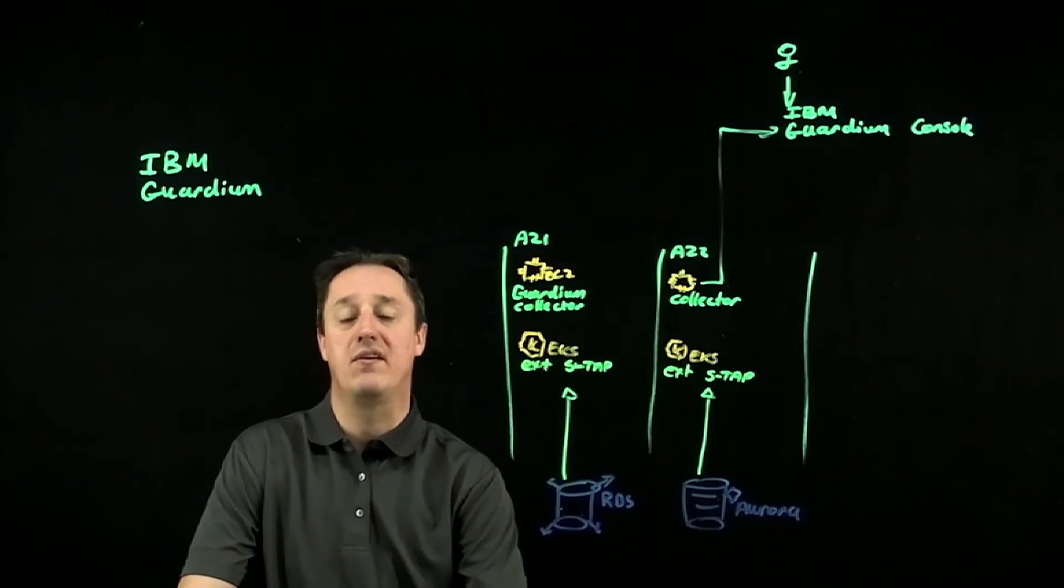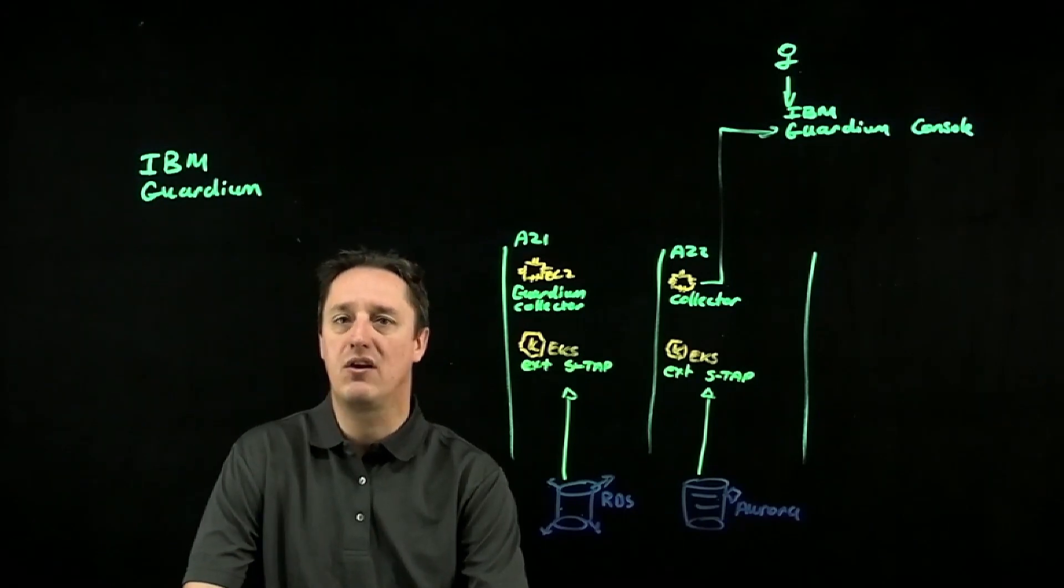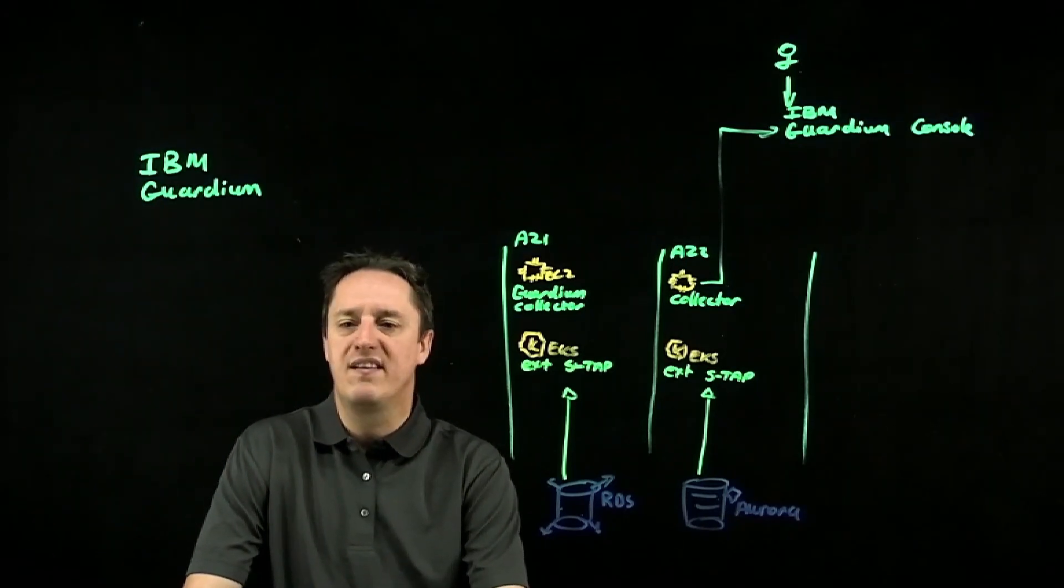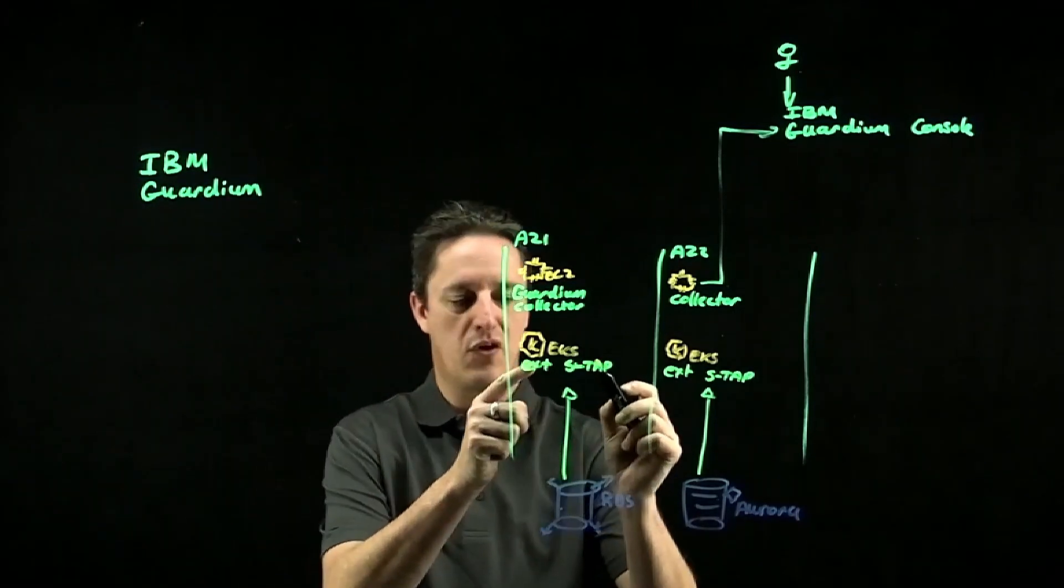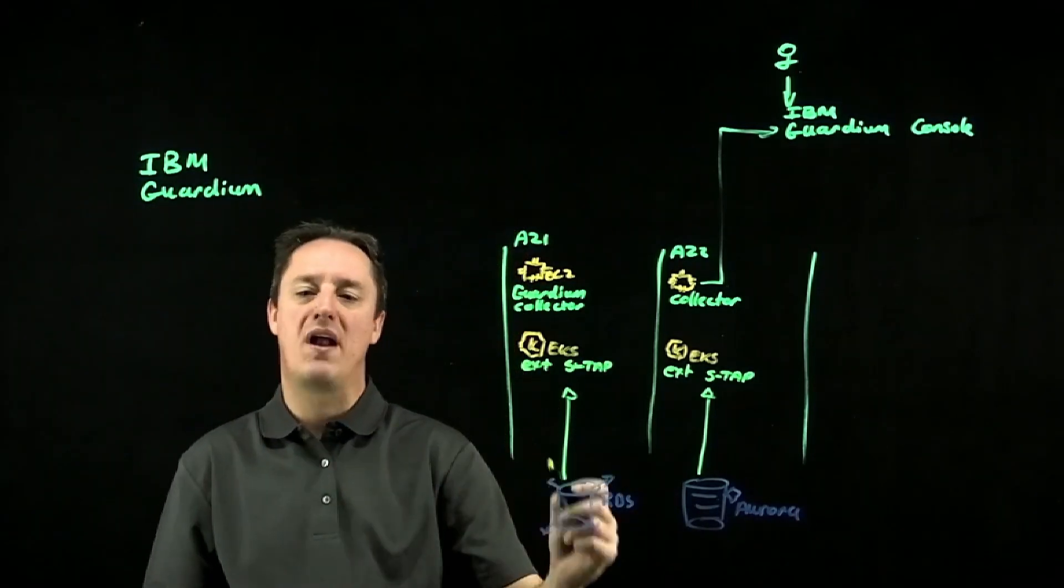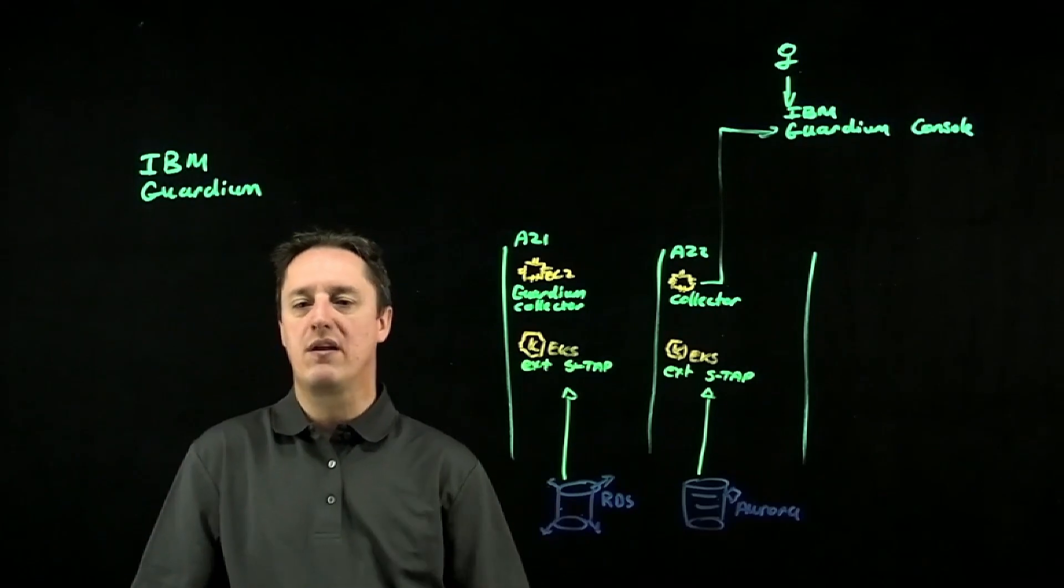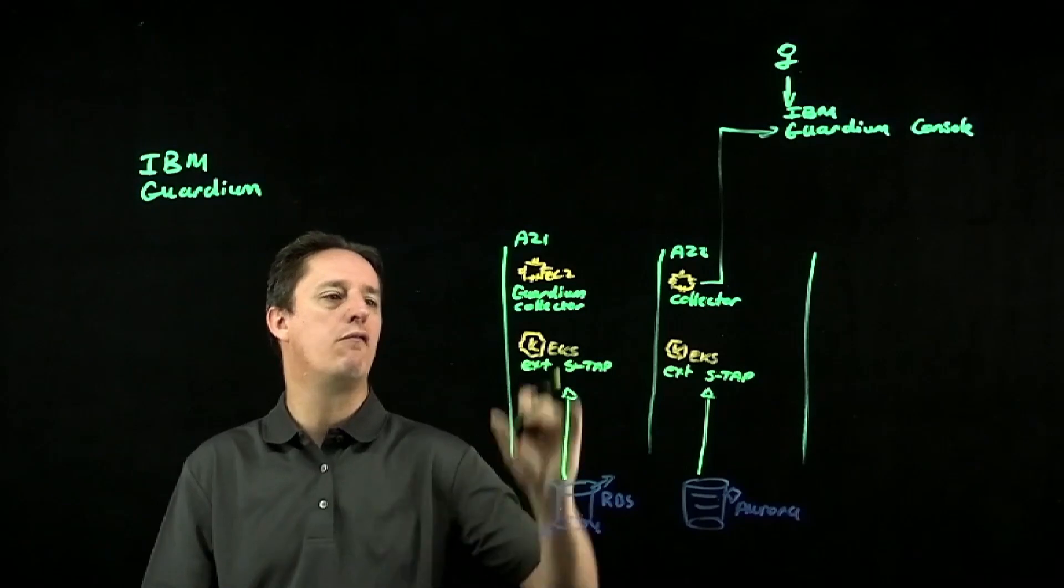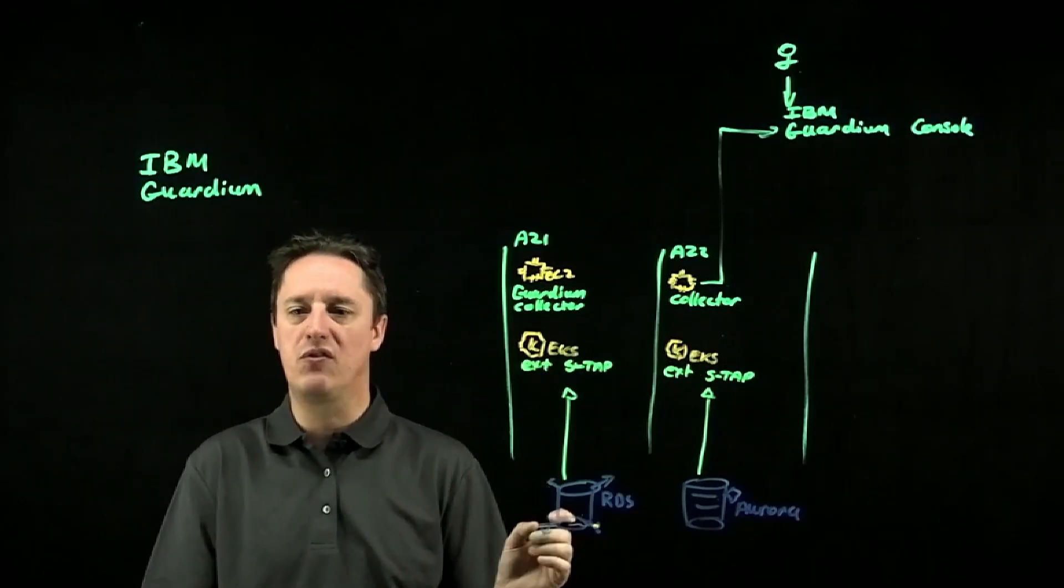Run to Guardium, and then is flagged against the rules in Guardium to highlight any sort of security risks. So essentially what we're doing is instead of deploying the agent directly onto the database, we're running it externally as a relatively small containerized workload, and you're still able to take advantage of IBM's Guardium security solution.